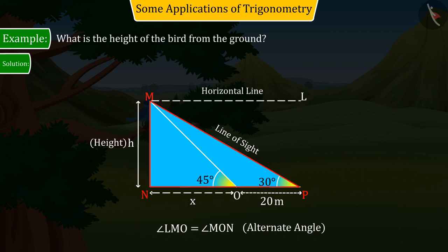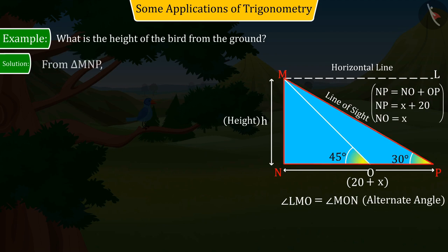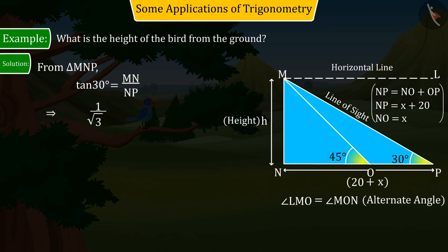In triangle MNP, we can see that the measure of side MN will be h and the measure of side NP will be 20 plus x. So, with the help of the information obtained from right angle triangle MNP and trigonometric ratios, the value of tan 30 degrees is obtained as MN by NP.